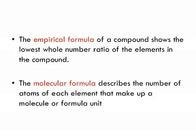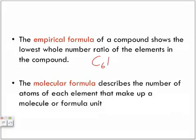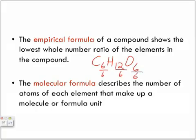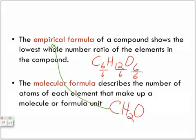If we look at something like glucose, C6H12O6, this is considered a molecular formula. But if we divide and reduce these numbers — 6, 12, and 6 — to the lowest term, we can divide all three subscripts by 6. So we get CH2O. That's obviously not going to be glucose, but that is considered the empirical formula of glucose.